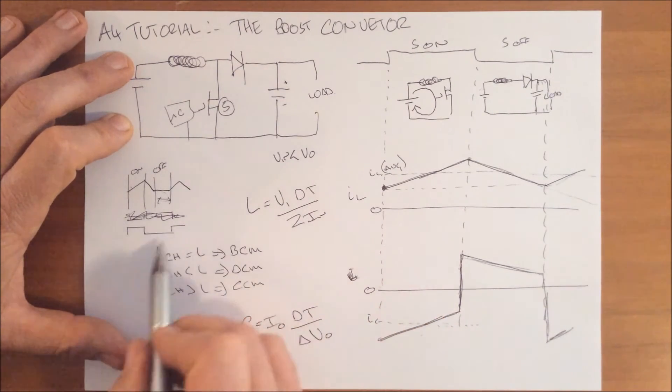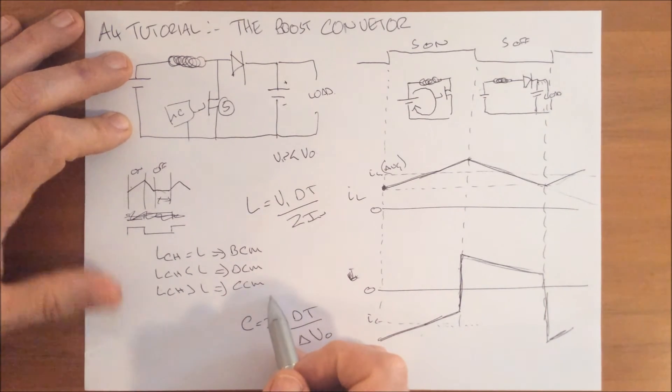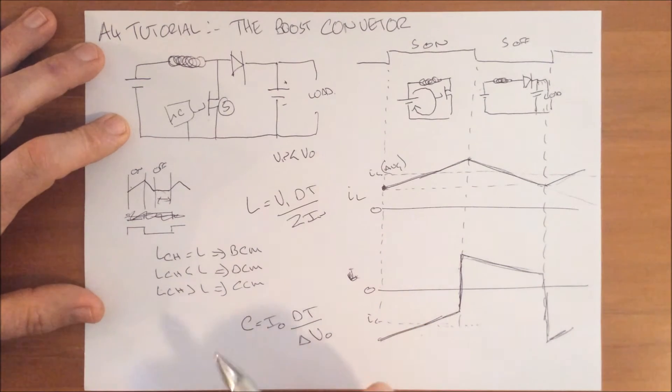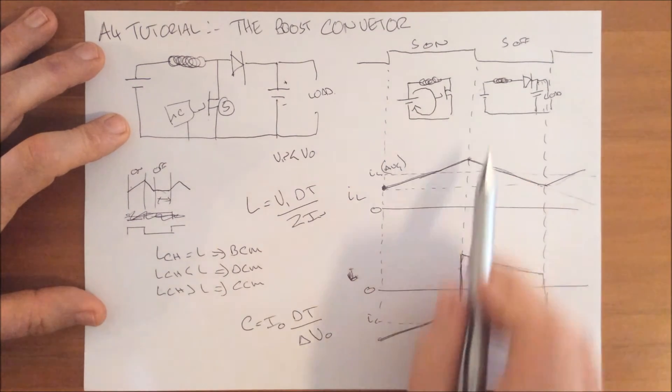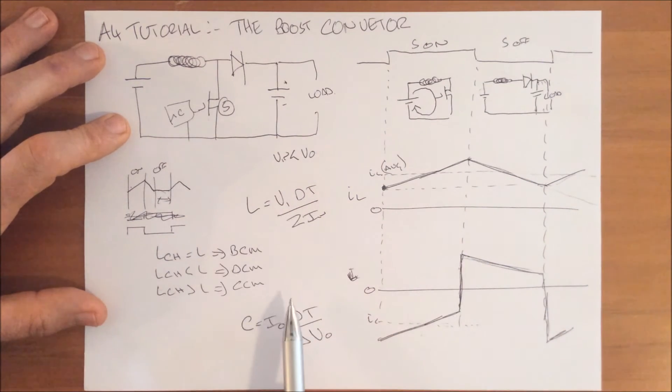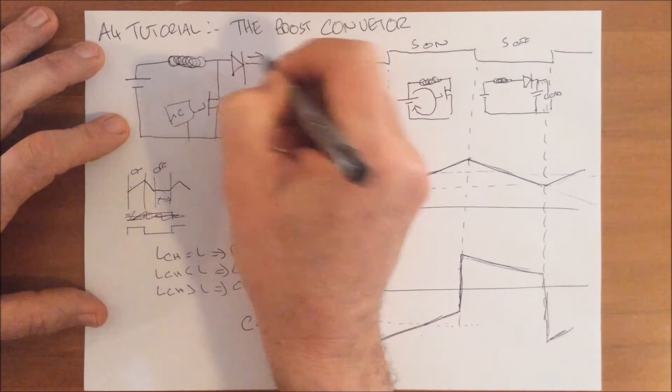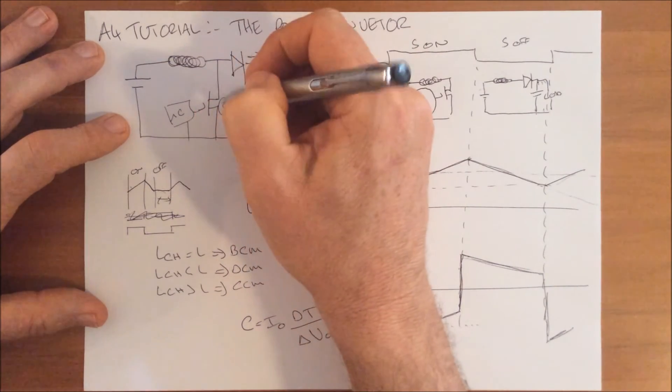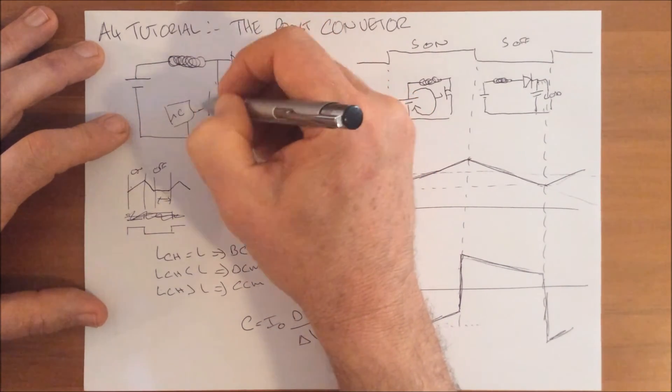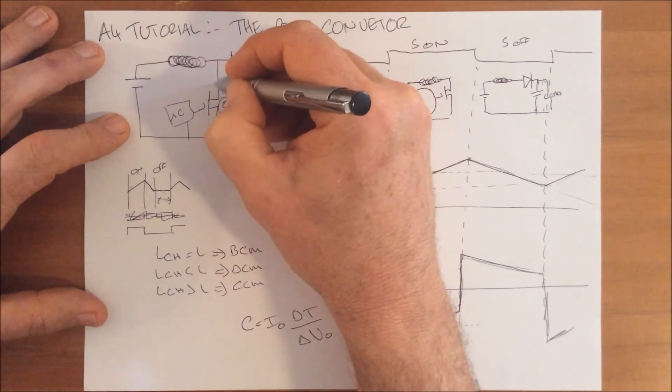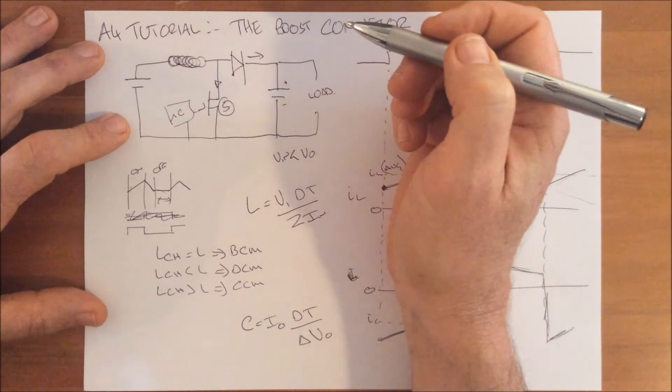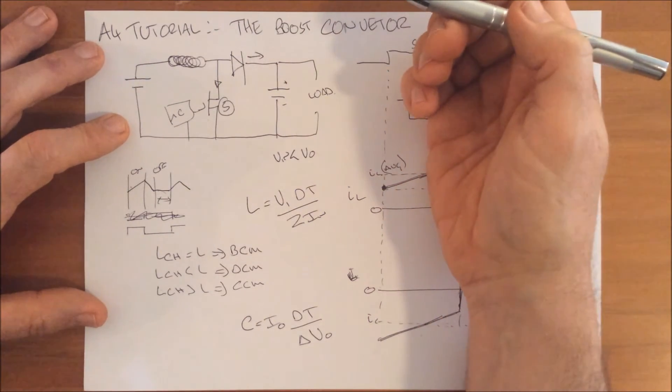The final thing to note: this diode has got to be big enough to handle the current through it, and similarly with this MOSFET - it's got to be able to handle the voltage supply as well as the current through it. That's pretty straightforward.